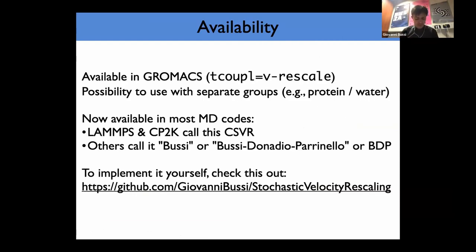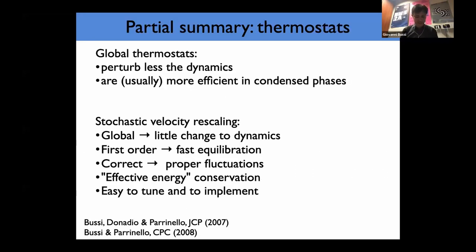This algorithm was published in 2007 and is now widely available in many MD codes. In PLUMED and CP2K it is called CSVR; sometimes called Bussi-Donadio-Parrinello or BDP. In GROMACS it is t-coupling equal to V-rescale, where you can also couple separate groups independently. There is code available to implement it yourself. In summary: I explained the difference between local and global thermostats, why global thermostats are interesting, and introduced stochastic velocity rescaling — first-order, calibrates fast, gives correct fluctuations, allows monitoring of energy conservation, and is easy to tune and implement.